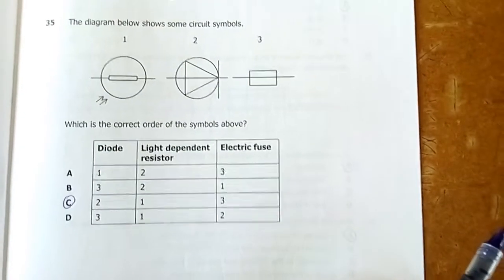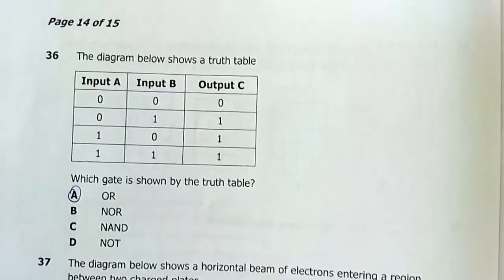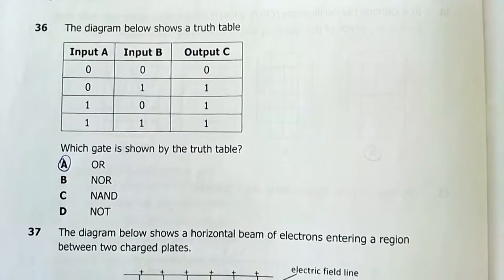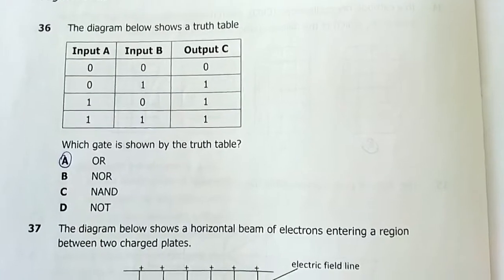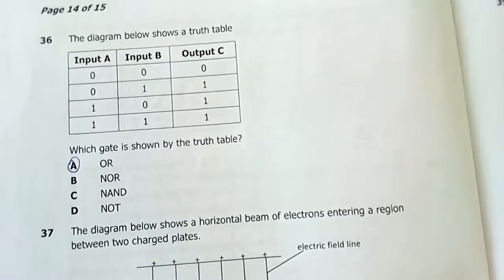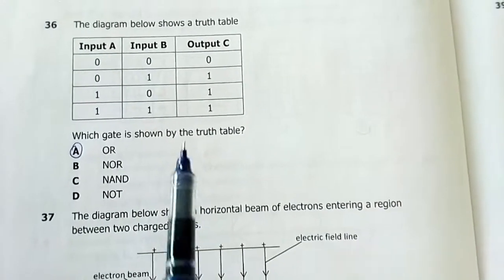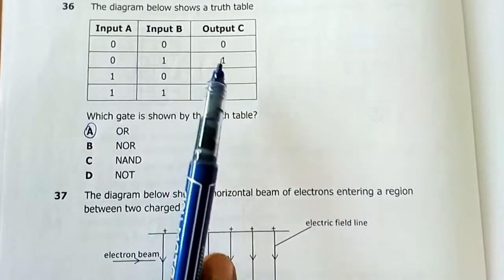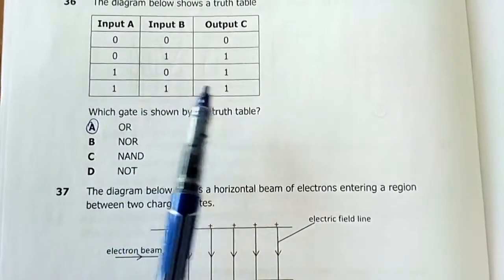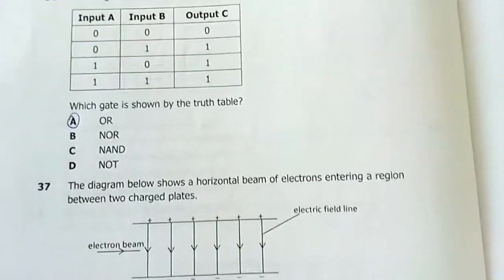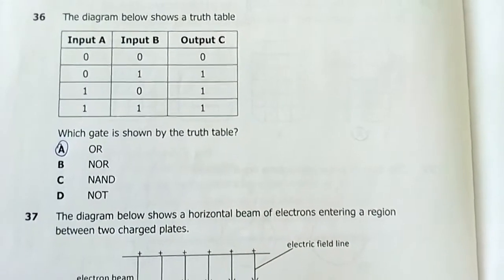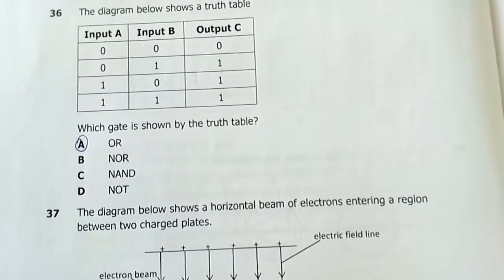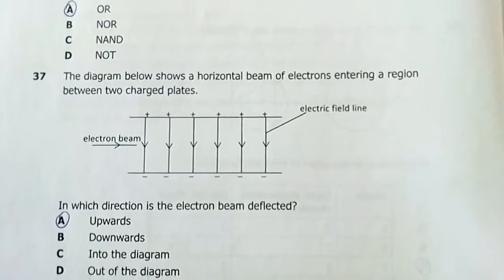Question 36: A truth table is shown. Which logic gate does it represent? This is the OR gate — if A or B is high, the output is high; if both are high, output is still high. Check out truth tables and logic gate circuits for full understanding. Answer is A.